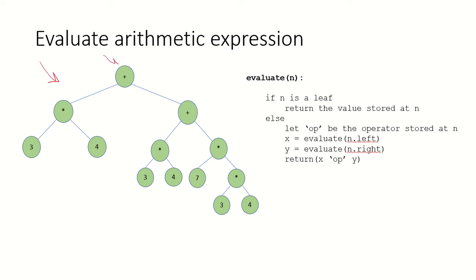We will start from the root node and call this function recursively. This is the node that we are currently visiting. The first thing we need to do is check whether the node is a leaf or not. If it is a leaf, then we know that it is an operand, because in an expression tree all the operands are the leaf nodes. If it is not a leaf, that means it is going to be one of the operators.